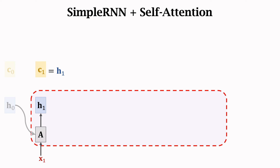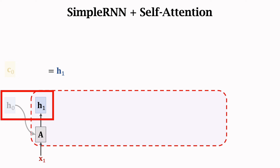After updating the state H, we compute the new context vector C. C1 is the first context vector. We simply let it be H1. Here's the reason: C1 is the weighted average of the existing H vectors. Currently there are only two H vectors; the initial state H0 is a zero vector, so we ignore H0. Then C1 is simply H1.